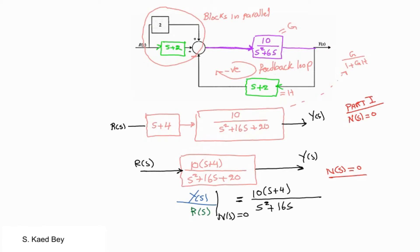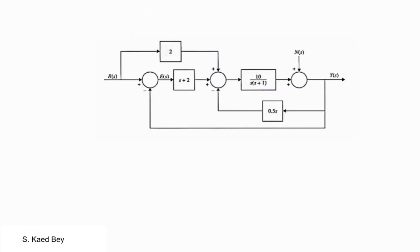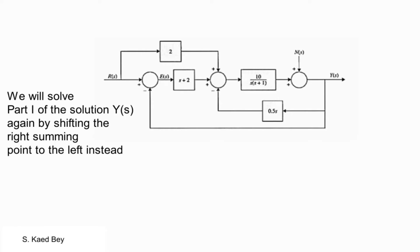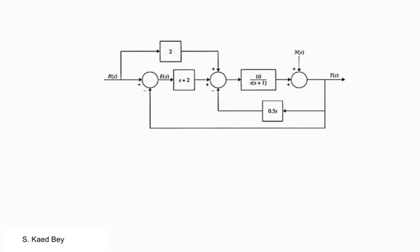Let us solve Part 1, the first component of the solution Y, in a different way. In the previous method, we moved the summing point on the left to the right-hand side. Now, instead, we will be moving the right summing point to the left, i.e. moving the S+2 block to the right-hand side.